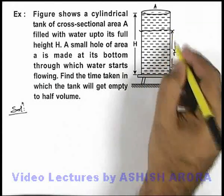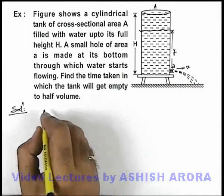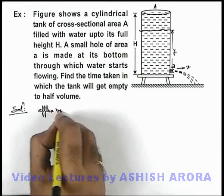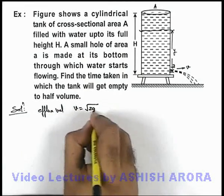If water level is at a height y above the hole, the velocity of efflux we can directly write as: efflux velocity v equals root 2gy.